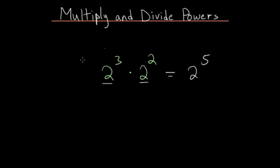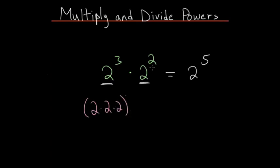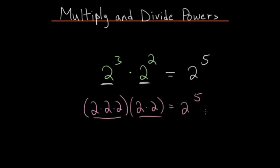If you ever forget this rule, you can just think about what each of these things mean individually. What does it mean to raise 2 to the 3rd power? Well, 2 to the 3rd power is just 2 multiplied by itself 3 times. 2 to the 2nd power is just 2 times 2. So you can see you have 5 of these 2s multiplied together, which we can rewrite as 2 to the 5th. This rule of adding exponents simply comes from understanding these basic principles.